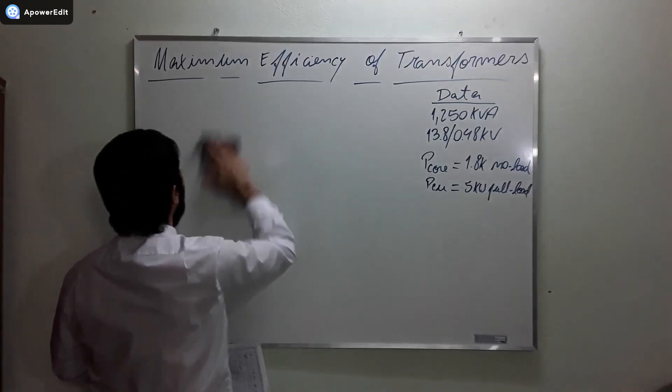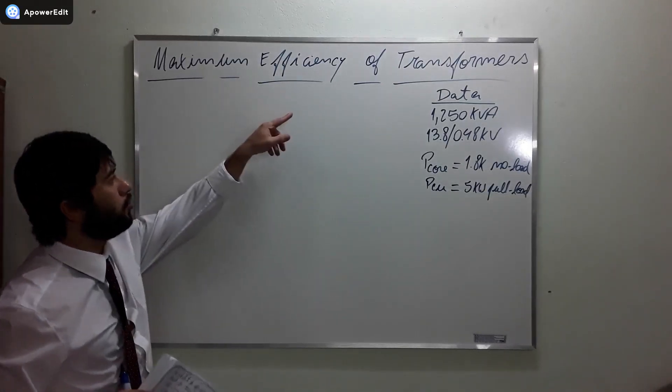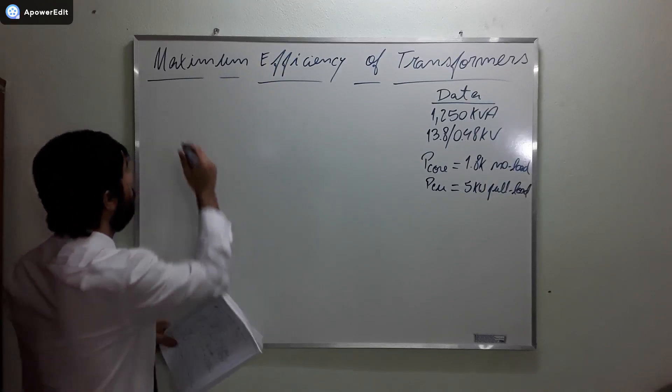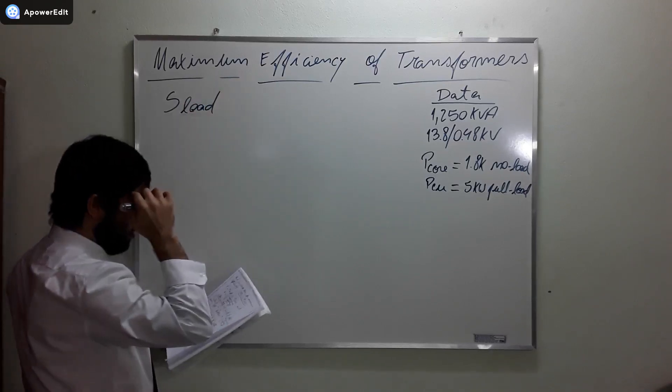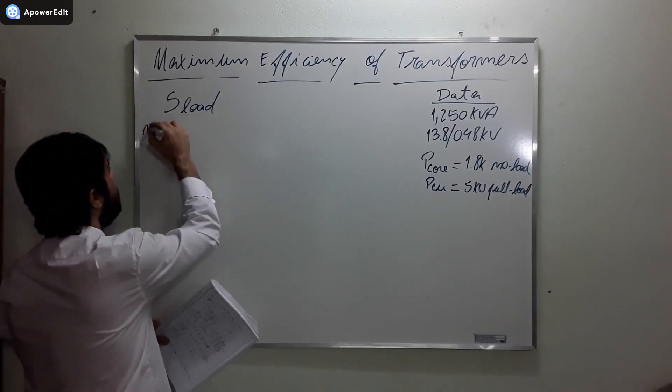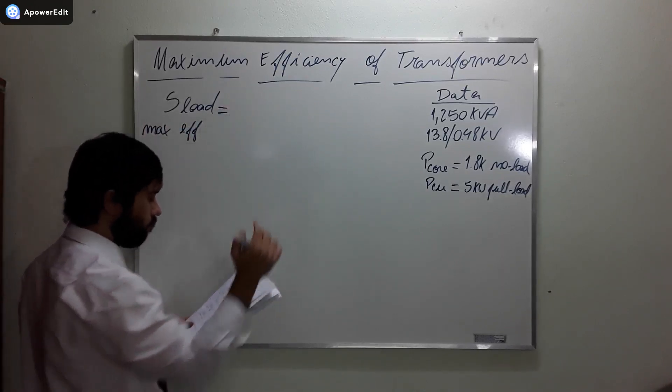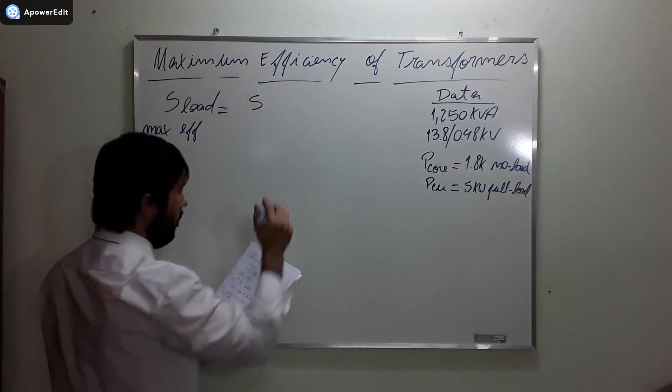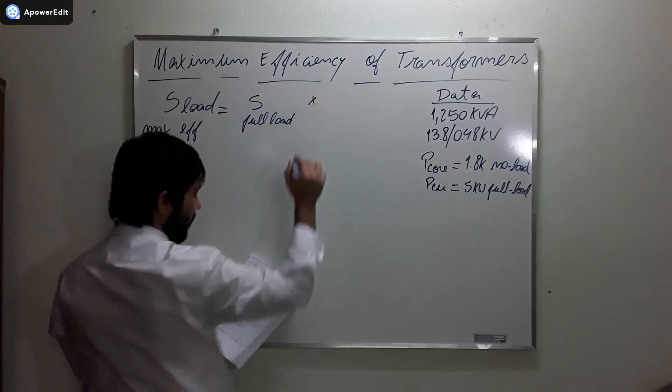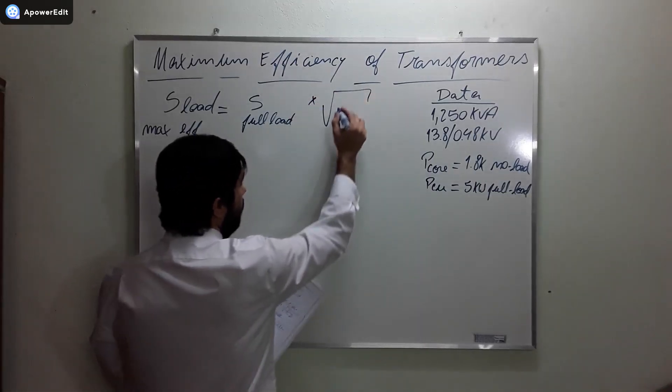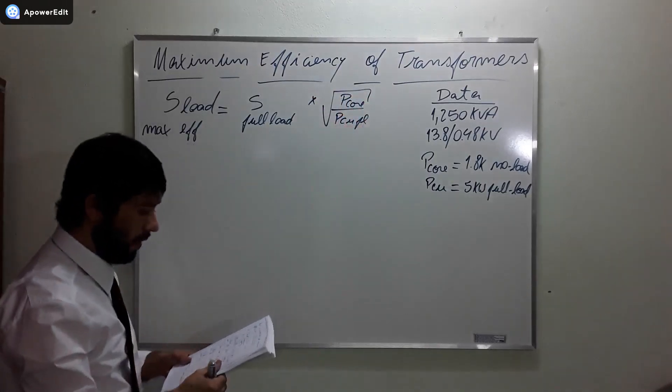The apparent power of the load that is going to make this transformer work in its maximum efficiency is going to be equal to the apparent power of the transformer at full load times that ratio, that ratio that we discover Pcore over PCU full load. Are you guys understanding everything?